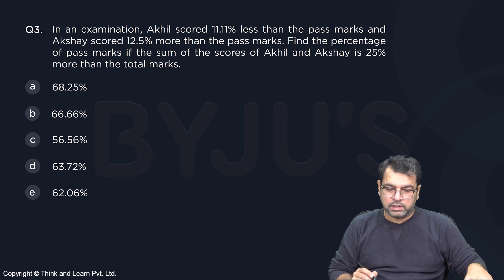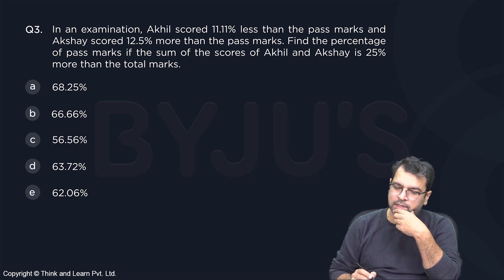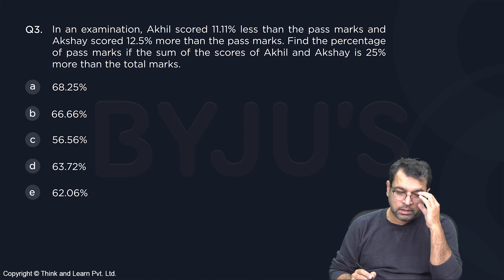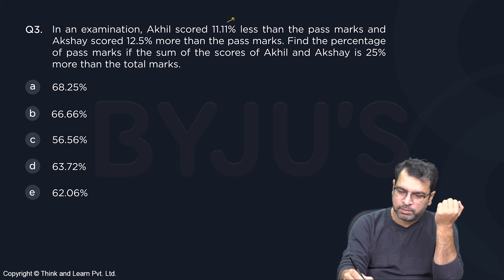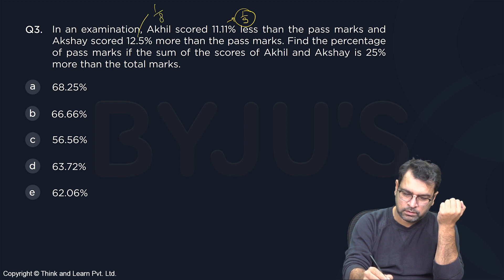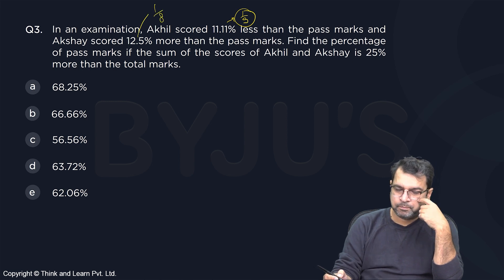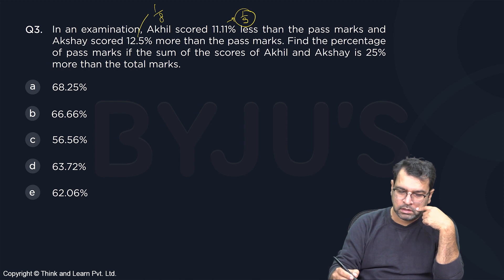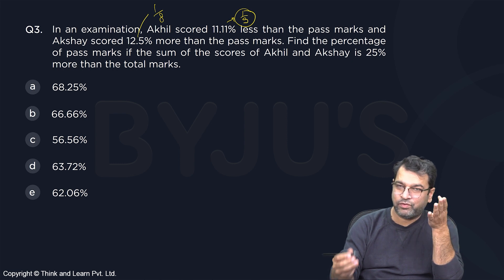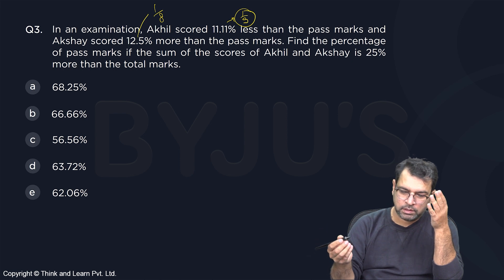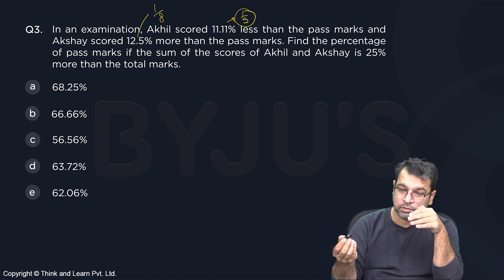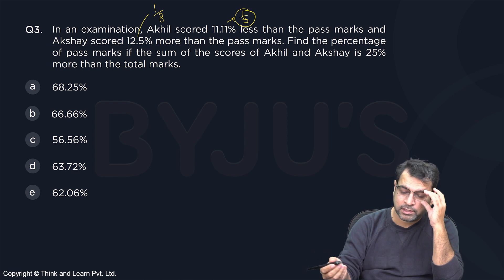In an examination, Akhil scored 11.11% less than the pass marks, and Akshay scored 12.5% more than the pass marks. Now, 11.11% means 1/9, and 12.5% is 1/8. So basically, Akhil scored 1/9 less, which means 8/9 of the pass marks. Akshay scored 1/8 more, that is 9/8 of the pass marks.